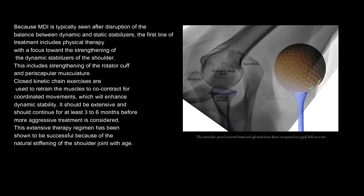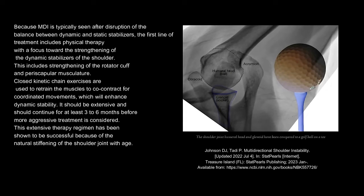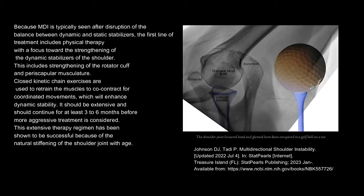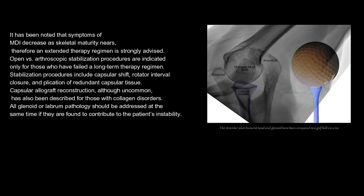Because MDI is typically seen after disruption of the balance between dynamic and static stabilizers, the first line of treatment includes physical therapy with a focus toward strengthening of the dynamic stabilizers of the shoulder. This includes strengthening of the rotator cuff and periscapular musculature. Closed kinetic chain exercises are used to retrain the muscles to co-contract for coordinated movements, which will enhance dynamic stability. It should be extensive and continue for at least three to six months before more aggressive treatment is considered. This extensive therapy regimen has been shown to be successful because of the natural stiffening of the shoulder joint with age. It has been noted that symptoms of MDI decrease as skeletal maturity nears, therefore an extended therapy regimen is strongly advised.